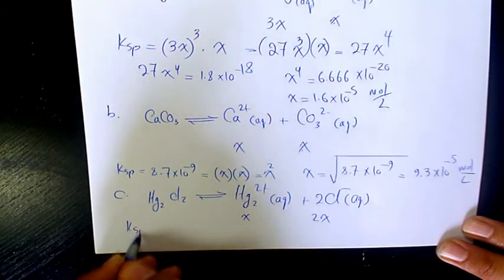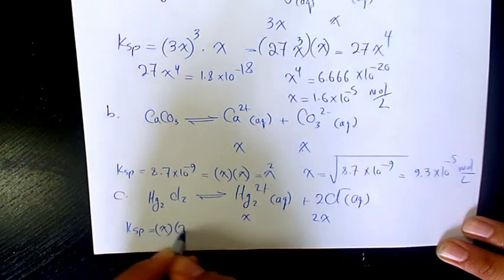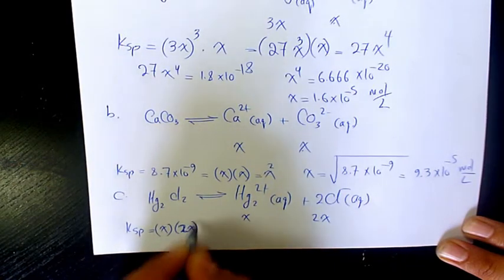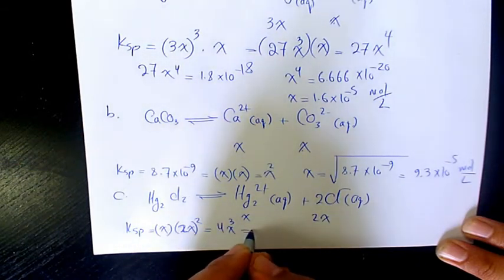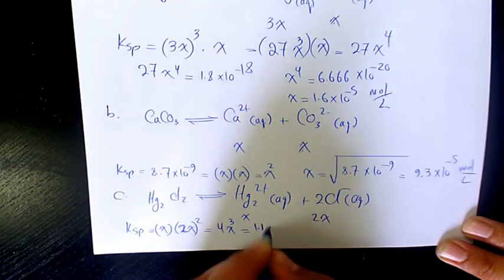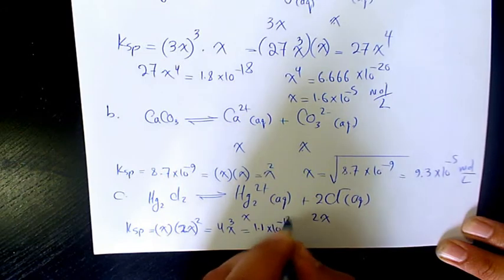So KSP will be X times 2X to the power of 2. That will be 4X cubed. Equals to KSP, which is 1.1 times 10 to the power of negative 18.